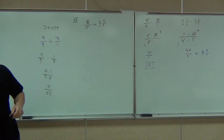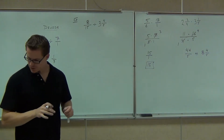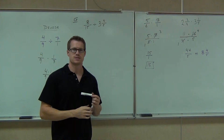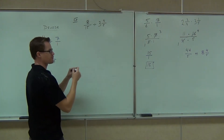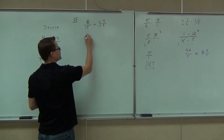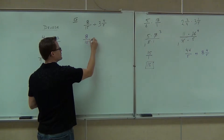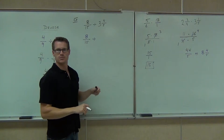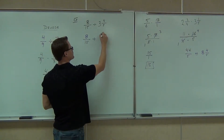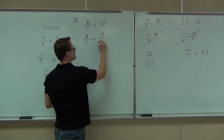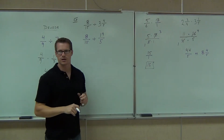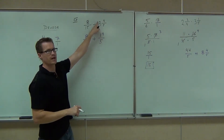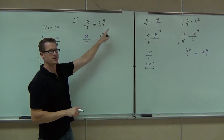Eight-fifteenths divided by three and four-fifths. Why don't you tell me the first thing you've got to do? This one's already a fraction like we like to see it — eight-fifteenths. And we're going to divide by what this fraction becomes: nineteen over five. We're multiplying three times five, that's 15, adding four, that's 19. We keep the denominator, so that's over five.